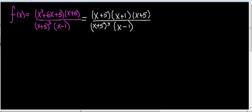See how convenient it is to have this already factored out completely — just by looking at it you can determine how many asymptotes and holes you have. But on your quiz you have to work through it and show your steps. So let's do the steps.